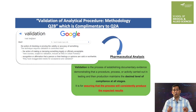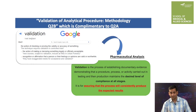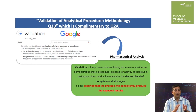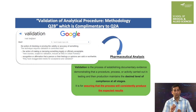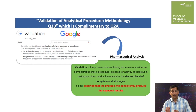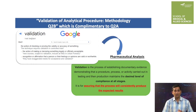This definition looks very complex and difficult to associate with analytical procedures. But in my view, validation is assuring that the process will consistently produce the expected result. That's it. For example, if a solution of a drug shows absorbance 0.250 at a particular wavelength at one time, then validation assures that every time, following identical analytical conditions, the solution of the drug will show the same absorbance. This is the validation.